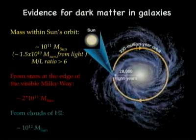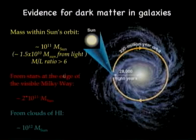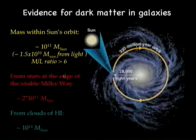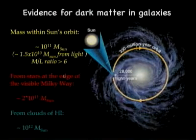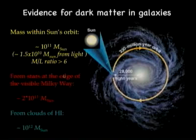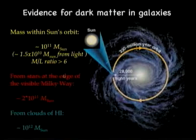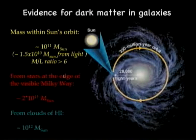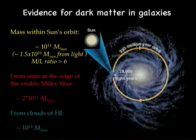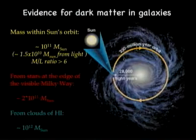We can push this even further and measure it way out where you can't see stars, but you can see clouds of gas, hydrogen. Measure the velocity, know how far away it is, and it turns out there is 1 trillion times the mass of the sun — 10 times more mass than what's right inside the yellow circle.